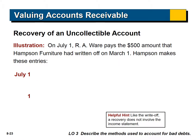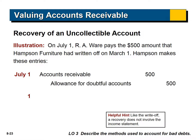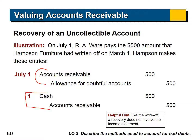Sometimes you write off an account and then they surprise you and come back later to pay. If that company comes back and pays, we reverse the entry we just made — flipping around the previous slide's entry — and then record the cash collection as normal. This is the normal entry we make for collecting cash on account.